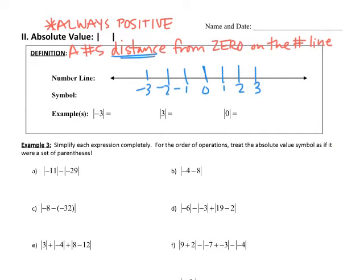The second topic of our notes today is absolute value. Absolute value is represented by two vertical lines. When you see those two vertical lines, that means we have to come up with a positive answer — always positive. The definition of absolute value is a number's distance from zero on the number line. Distance is always measured in positive numbers — you don't go for a negative distance when you walk.